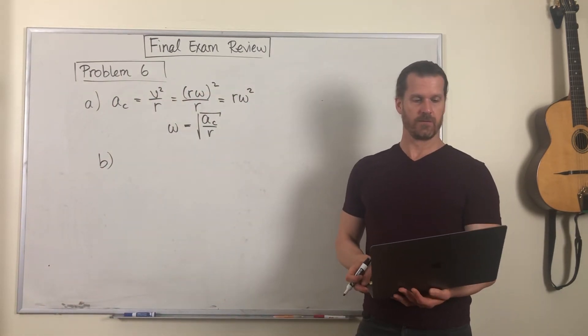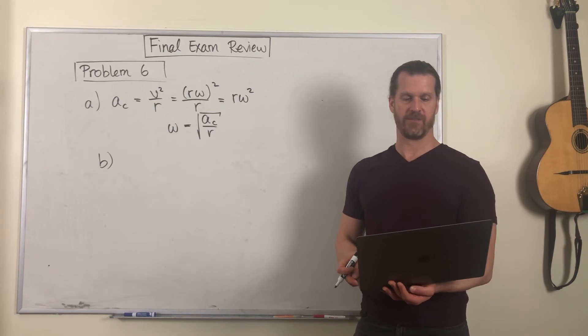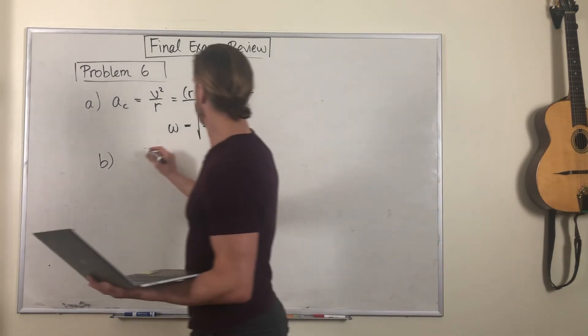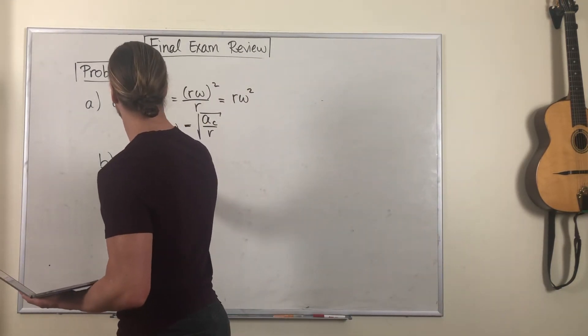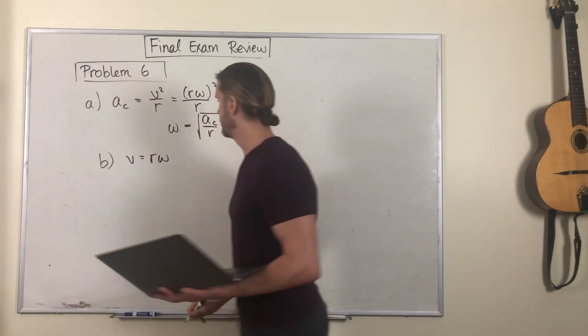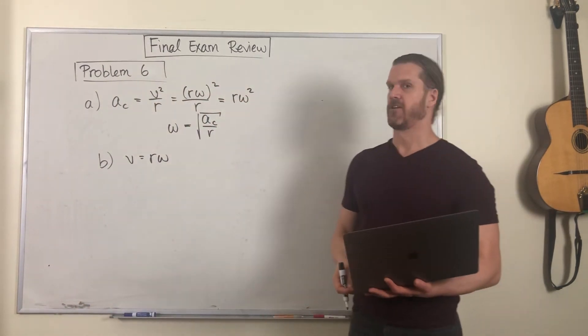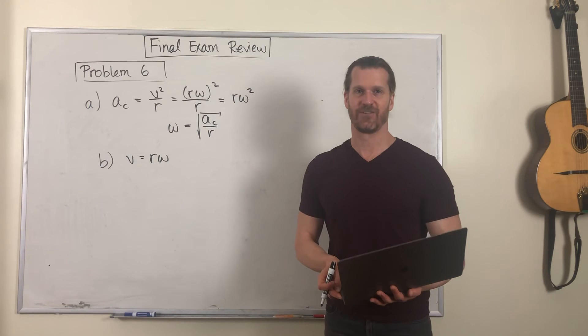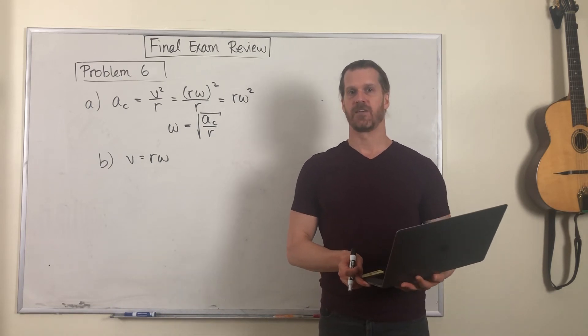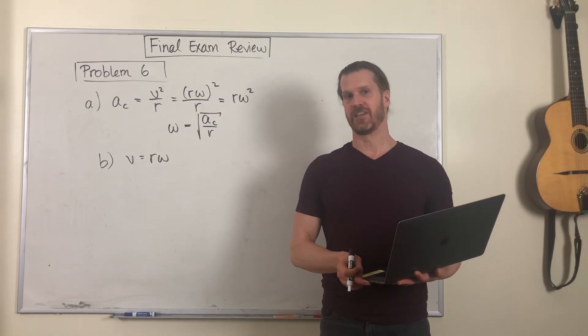What linear speed would a person in the centrifuge have at this acceleration? Well, that linear speed is R times omega. And that's all the calculations for the problem. Not a whole lot of calculations, but I think the situation is interesting.